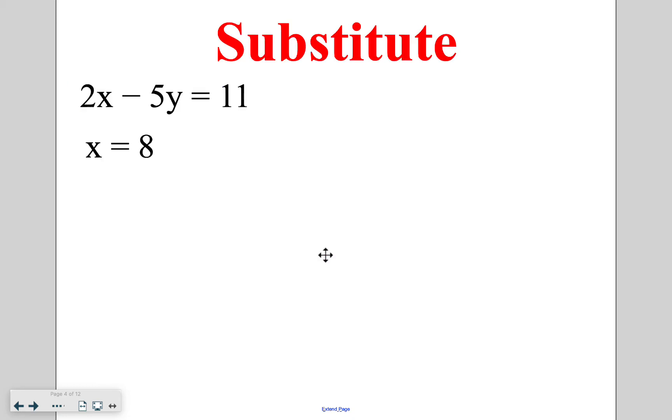For example, we're going to start with a very simple substitution problem where they actually give you one of the answers, just to show you how this works. So you have an equation saying 2x minus 5y is equal to 8. Substitution says that if you are given something that a variable is equal to, so in this case they tell you that x is equal to 8, you can substitute it in the place of x. So you can say 2 times 8 minus 5y is equal to 11, and then you would continue to solve your problem.